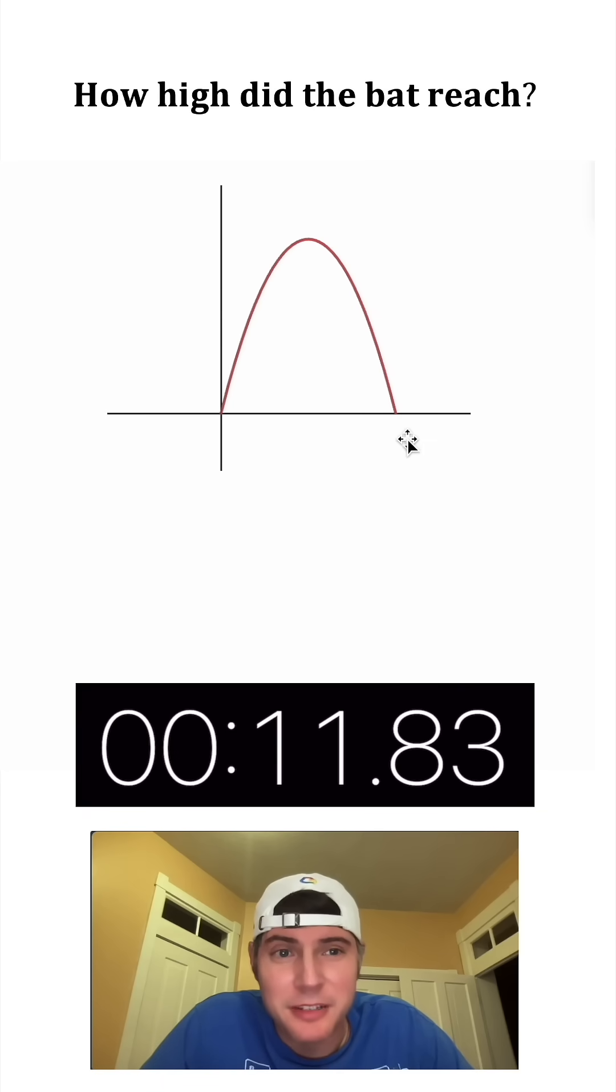The horizontal axis can be t for time in seconds and the vertical axis can be h for the height that the bat goes. So we're interested in this point right here - how high did the bat reach.